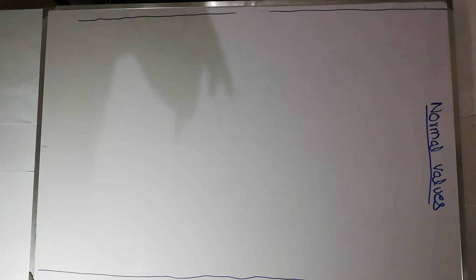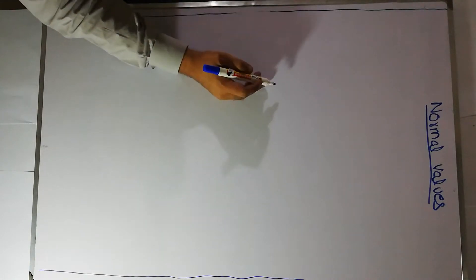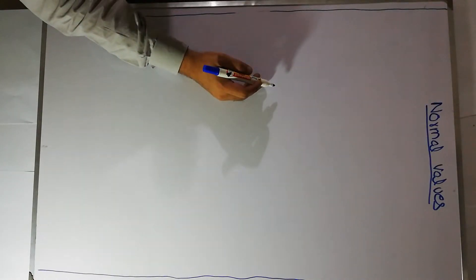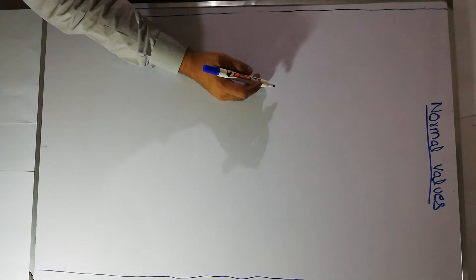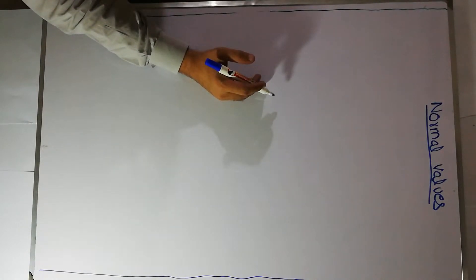In the previous videos we discussed homeostasis and how the body tries to maintain near constant values of different electrolytes and important constituents. Today we will discuss some important electrolytes and minerals, their normal values, their ranges, and the minimum and maximum values which the human body can survive without dying.